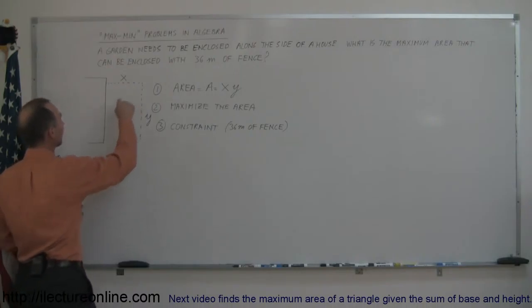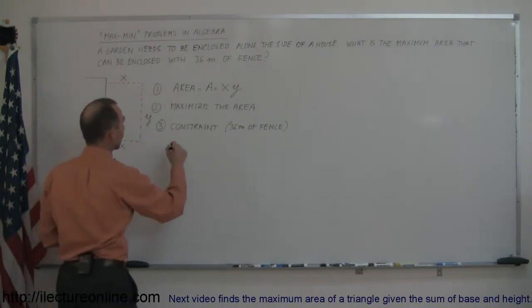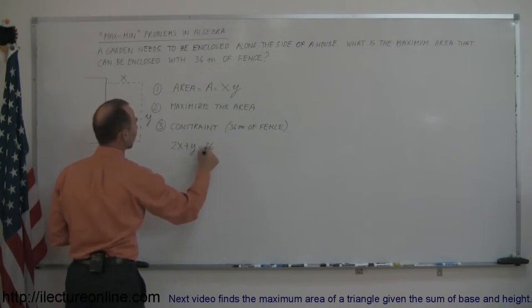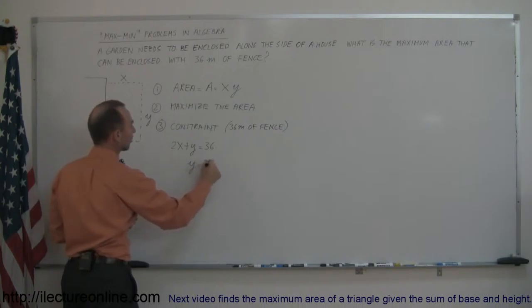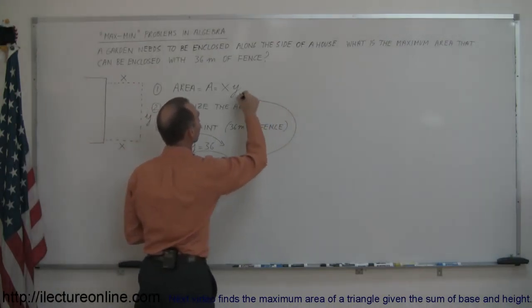Here we can see that if we add x plus y plus x, that should add up to 36. So we can say that 2x plus y equals 36. Which means I can replace the value for y by 36 minus 2x by bringing the 2x over to the other side, and substitute that into my original equation.